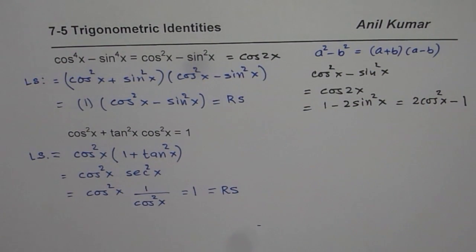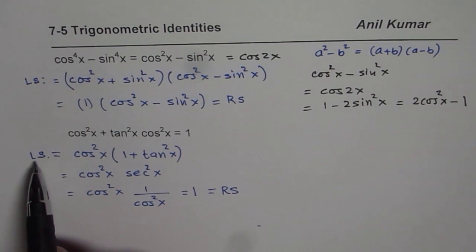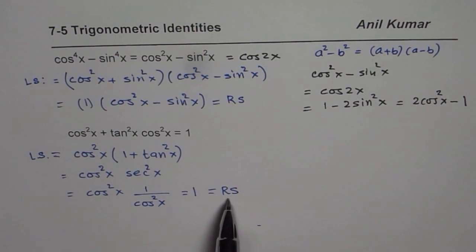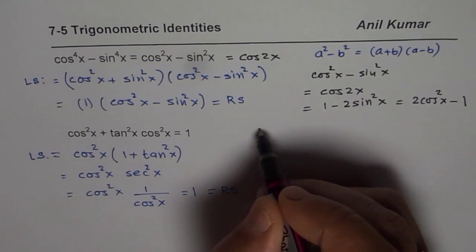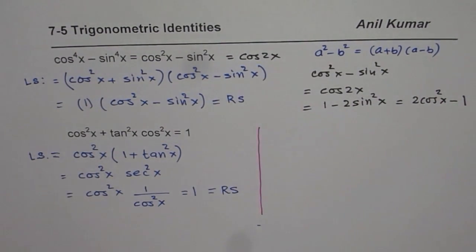So in proving identities you have to start from one side and go to the other. There are few exceptional cases when the identities are very complicated. In those cases you could use both the sides.